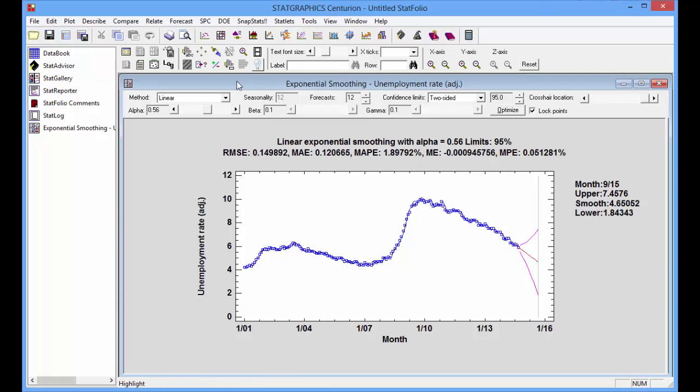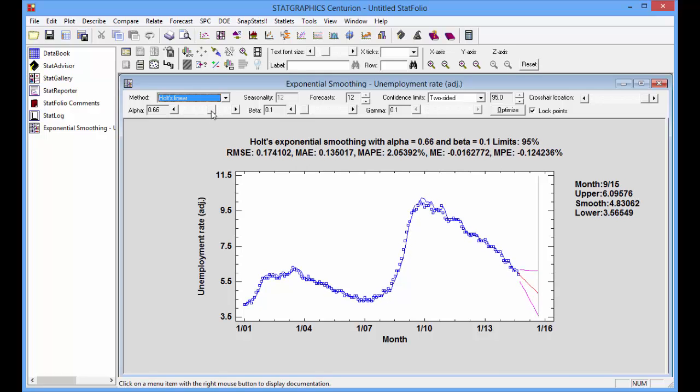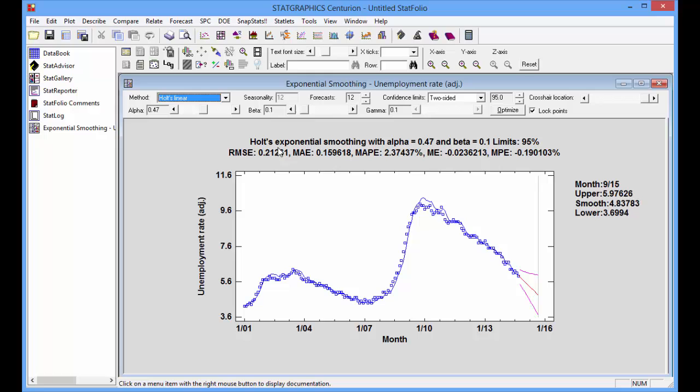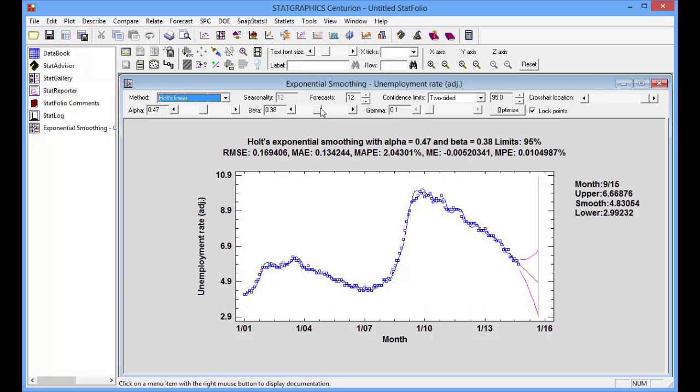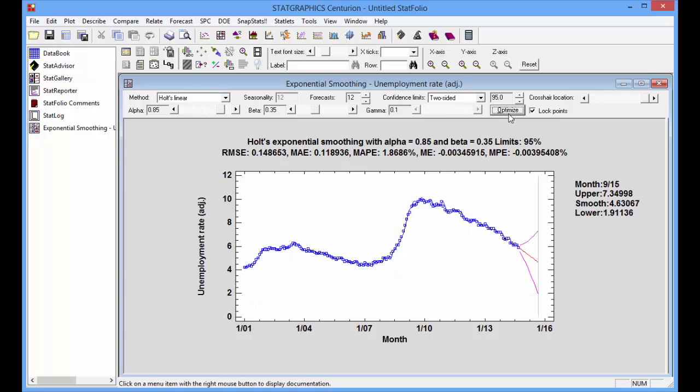I can do even a little better if I use Holt's linear exponential smoothing. Now I have two parameters, alpha and beta, one that's linked to the estimate of the level of the series and another that's linked to the slope of the forecast function. If I press optimize, it now finds a smoother with a MAPE of about 1.87%.